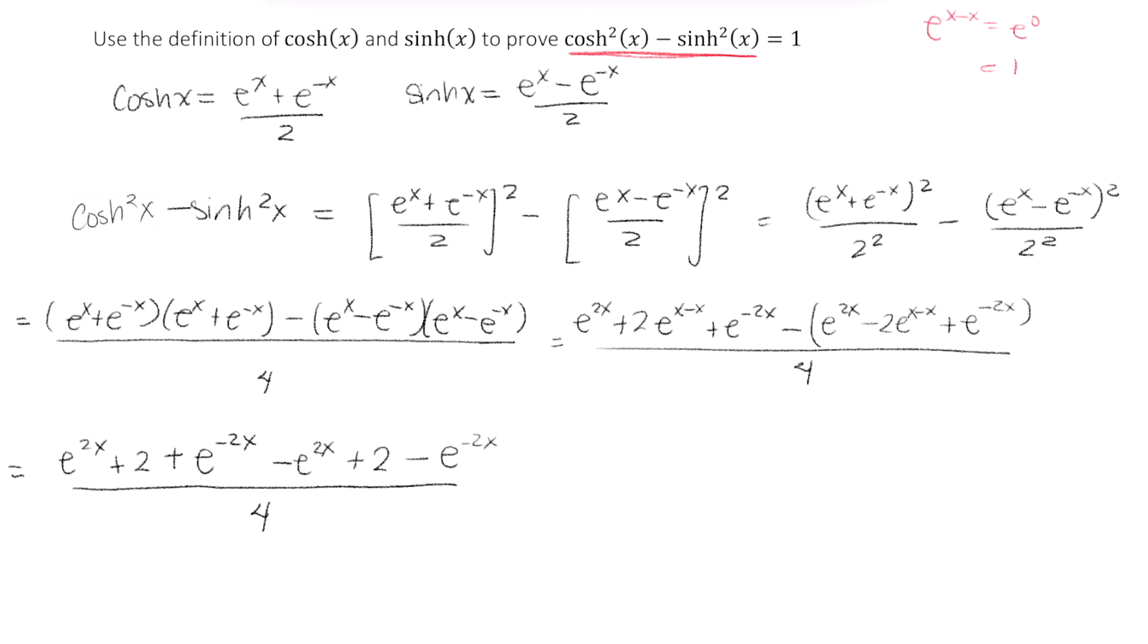Now you should see a lot of things that match. I have this e to the 2x, which is positive, and negative e to the 2x. So those are going to add up to 0. And then I have this other matching pair here.